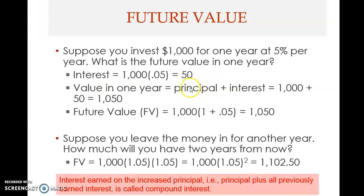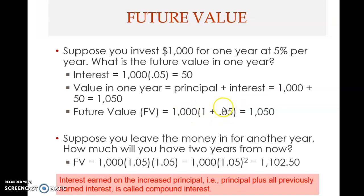The value in one year will include both the principal, which is one thousand dollars, plus the interest. Interest is what the investment yields — also known as the return. Therefore, principal plus interest equals one thousand dollars plus the fifty dollars interest, giving you one thousand and fifty. The future value is computed as the principal multiplied by one plus the interest rate: one thousand times 1.05 equals one thousand and fifty.